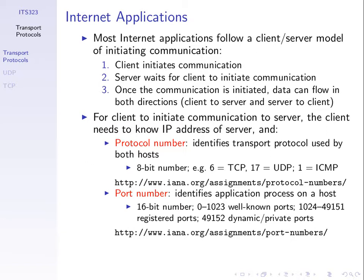For this to work, since the client initiates the communications, the client must know the address of the server it wants to contact. First, it needs to know the IP address of the server computer. Assuming we know its IP address, there are more things we need. We introduce a protocol number, which indicates the transport protocol being used for this data exchange. Each transport protocol has a number associated with it: TCP is number 6, UDP is 17, and ICMP is 1.